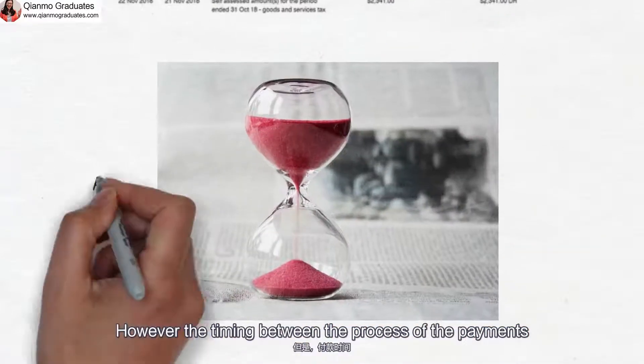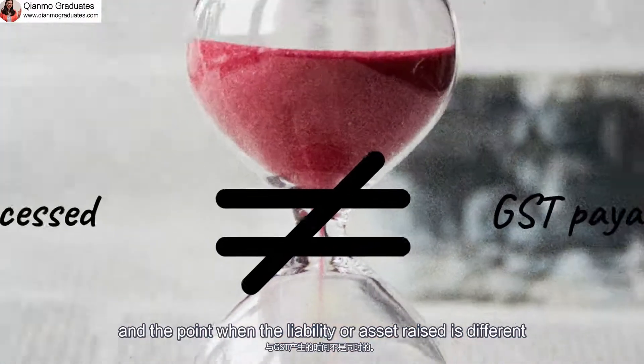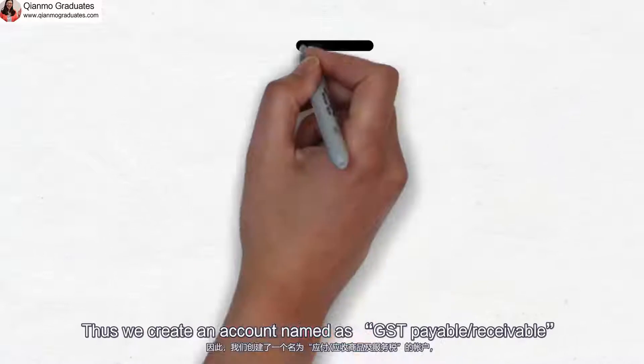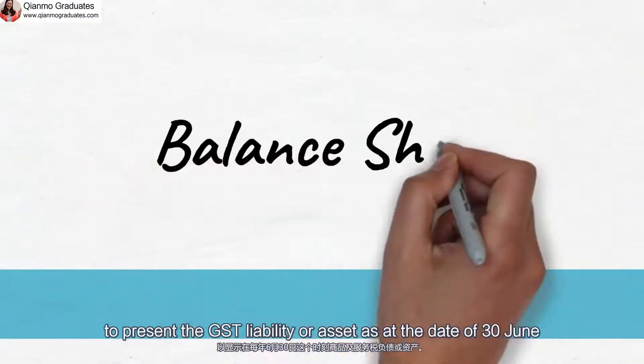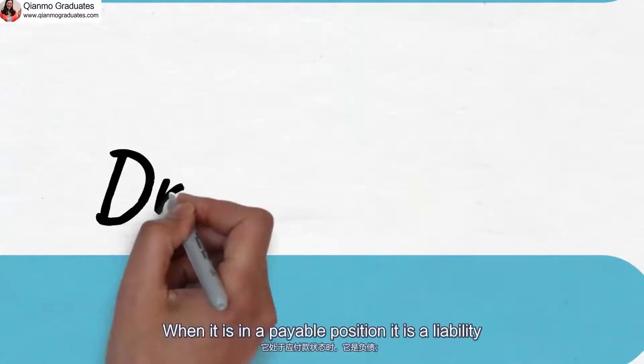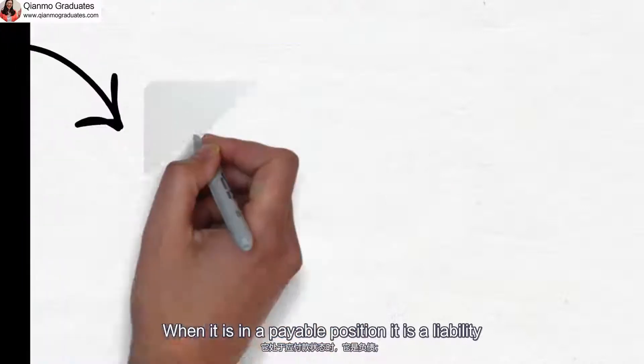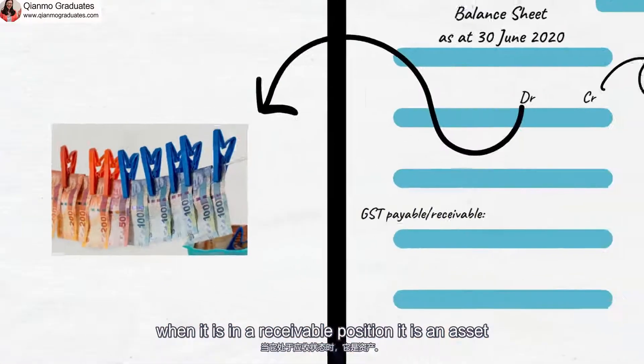However, the timing between the process of the payments and the point when the liability or asset raised is different. Thus, we create an account named as GST payable or receivable to present the GST liability or asset as at the date of 30th June. When it is in a payable position, it is a liability. When it is in a receivable position, it is an asset.